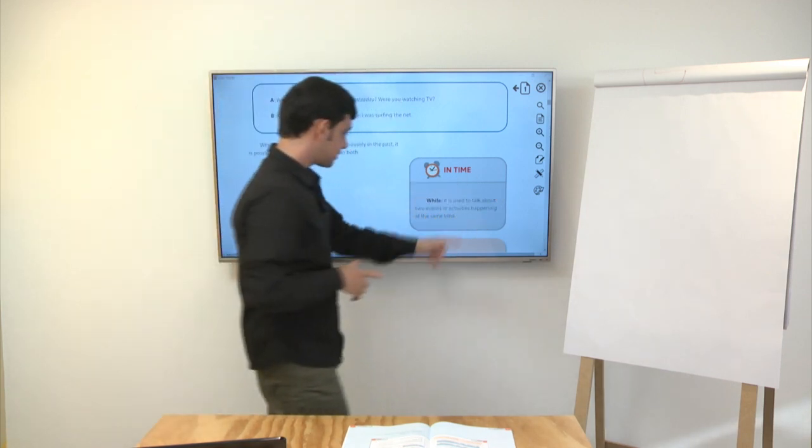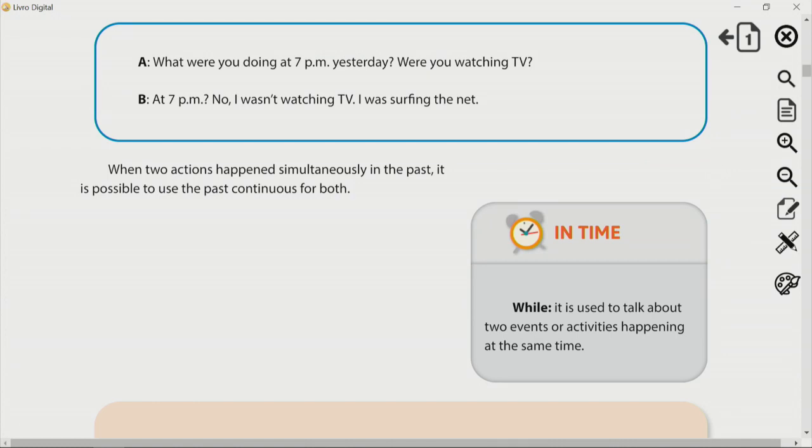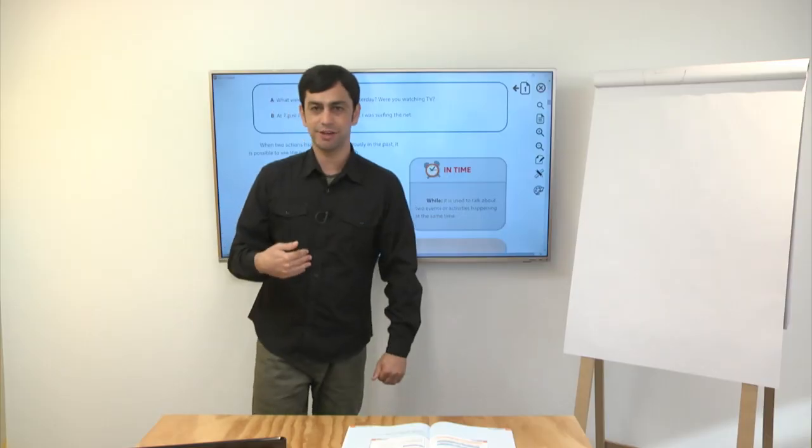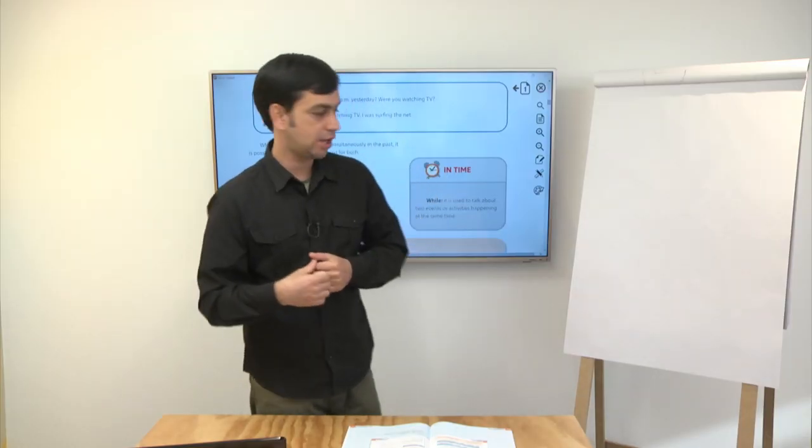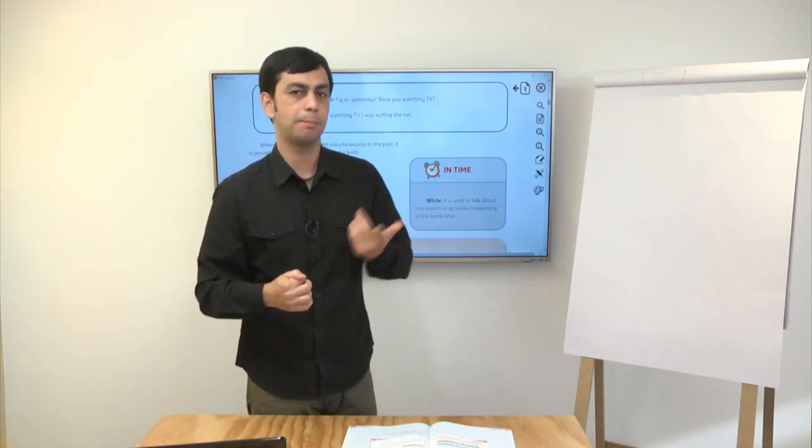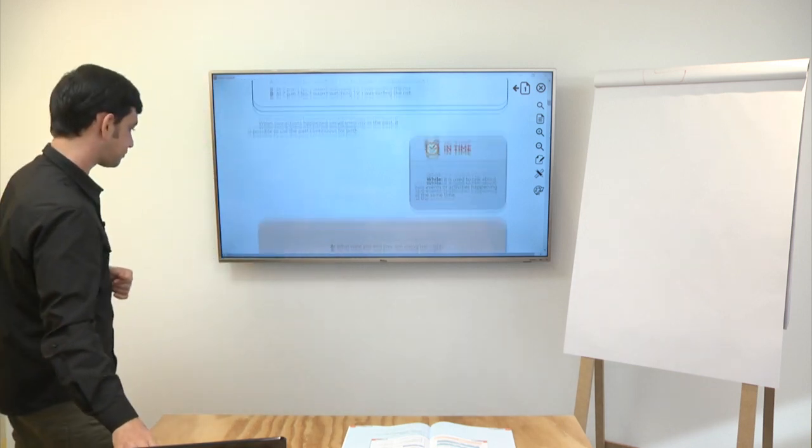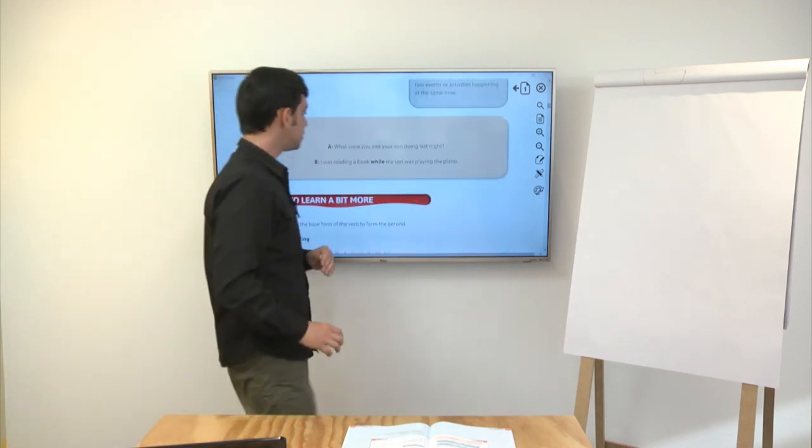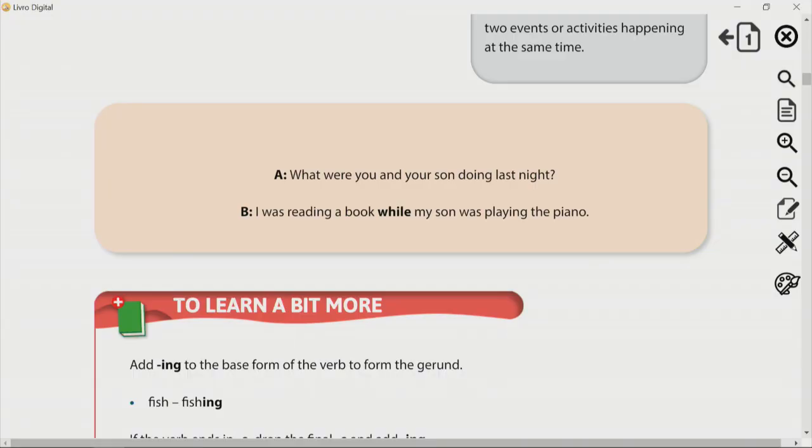Detalhezinho aqui. While, in time, while. Essa palavrinha, while, quer dizer enquanto. It is used to talk about two events or activities happening at the same time. Duas situações acontecendo ao mesmo tempo. Então, eu diria, eu estava vendo TV enquanto meu irmão estava jogando videogame. Então, I was watching TV while my brother was playing videogames. Ok? Então, mais um exemplo aqui. What were you and your son doing last night? I was reading a book while my son was playing the piano. Eu estava lendo um livro enquanto o meu filho estava tocando piano.